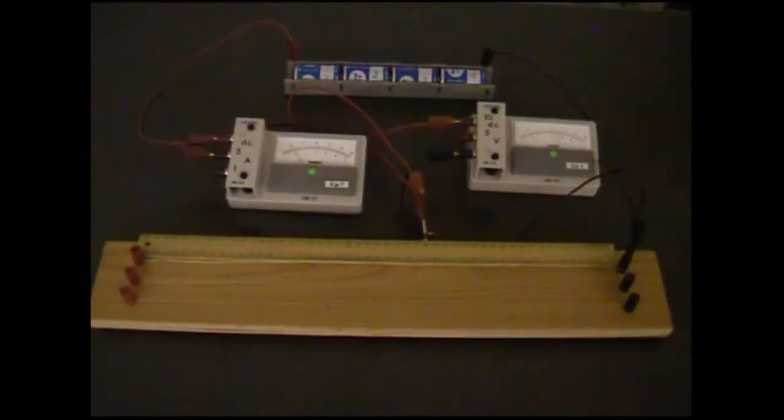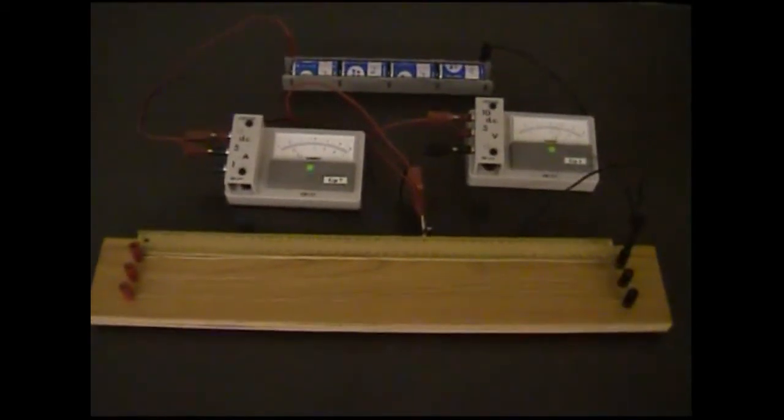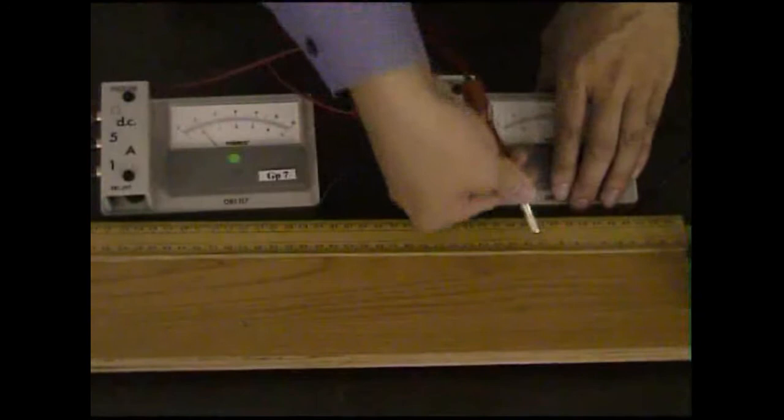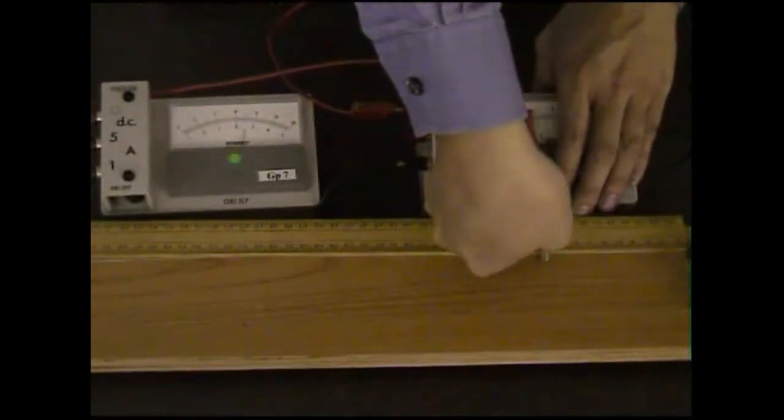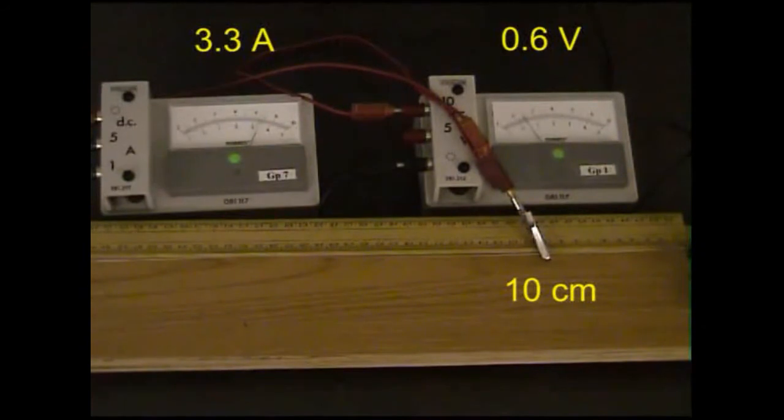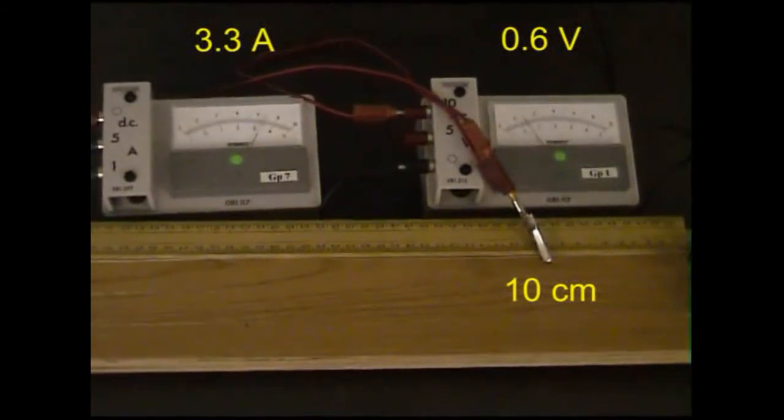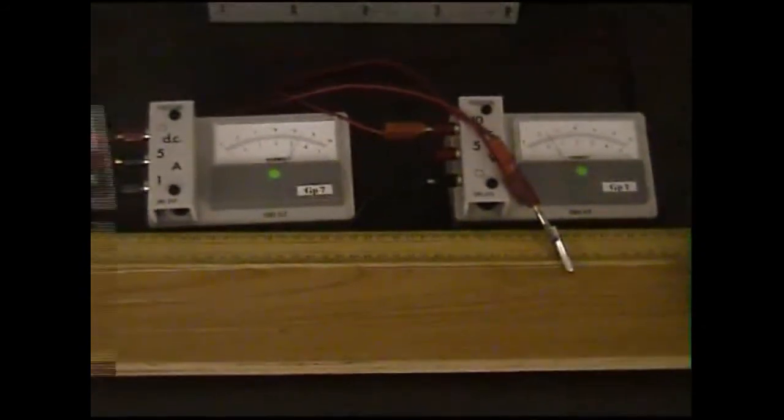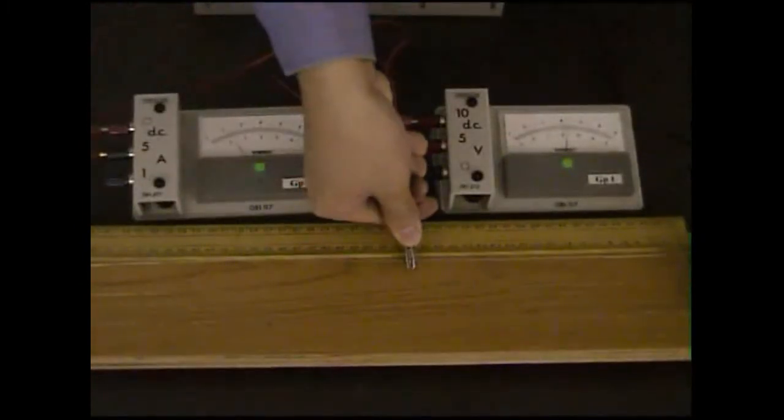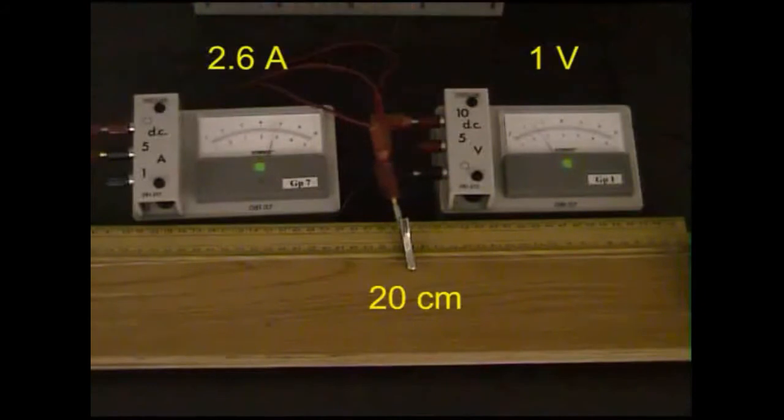You are provided with a wooden strip, on which two Eureka wires of different thickness are mounted. Using a crocodile clip as a sliding contact, connect up at the maximum length of one of the Eureka wires in a circuit. Take the readings of the voltmeter and ammeter, and calculate the resistance of different lengths of the wire.